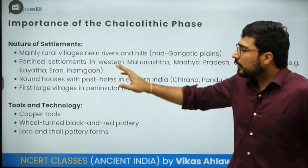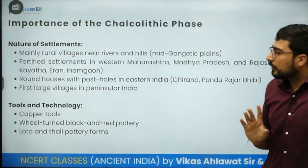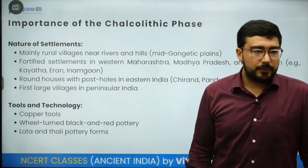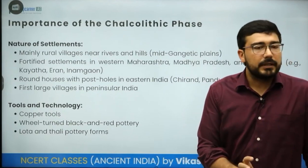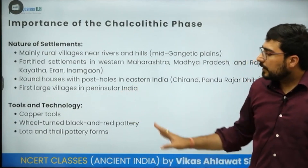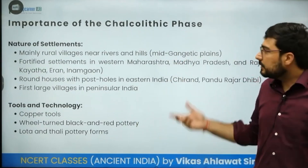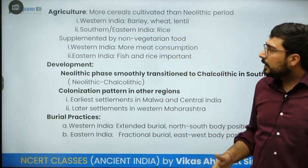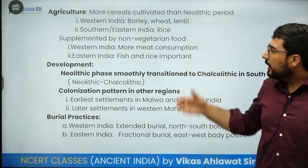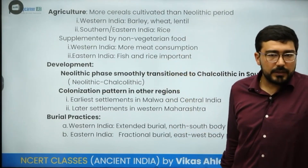The nature of Chalcolithic settlements is mainly rural, though some in western Maharashtra were fortified. Round houses are also found — a major example can be seen at Inamgaon and Chirand. These represent the first large villages in peninsular India, which emerged during the Chalcolithic period. Tools included copper implements and wheel-turned black and red pottery; customized pottery shapes like lotas and thalis also began appearing. In western India, agriculture centered on barley, wheat, and lentils, while in south and eastern India rice became very important. Meat consumption was high in western India, while fish consumption was higher in eastern India.